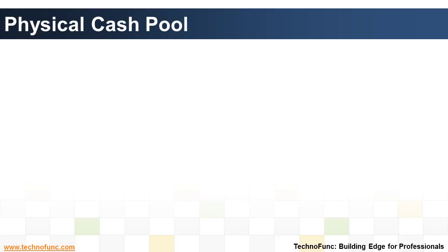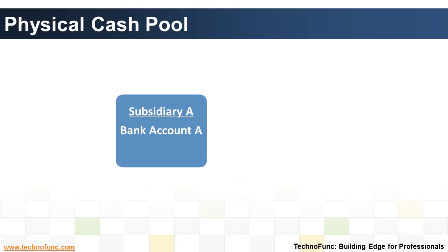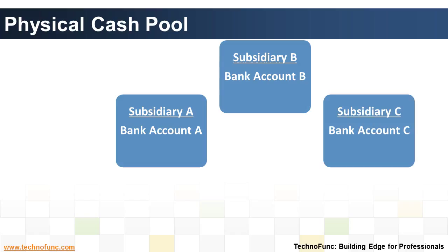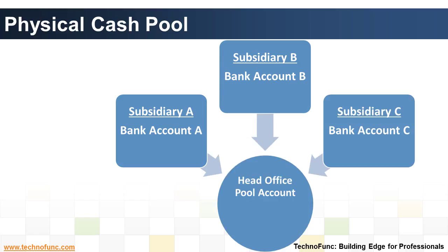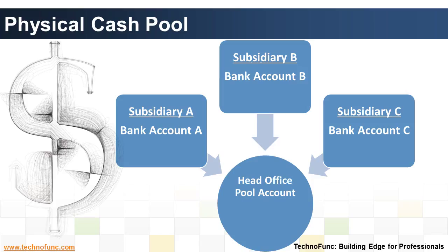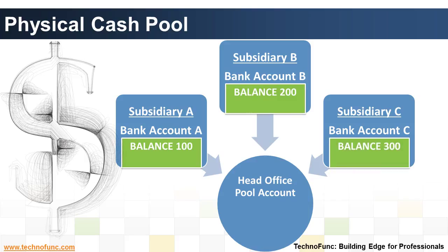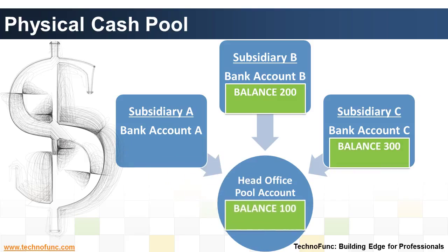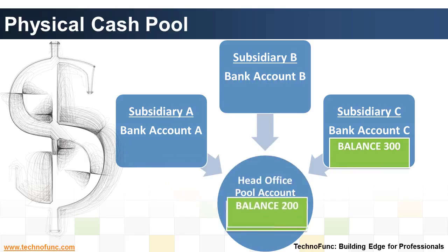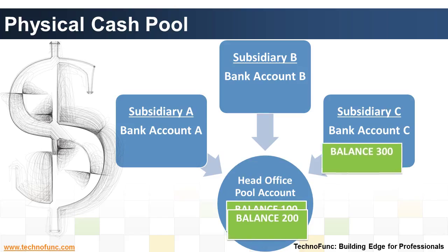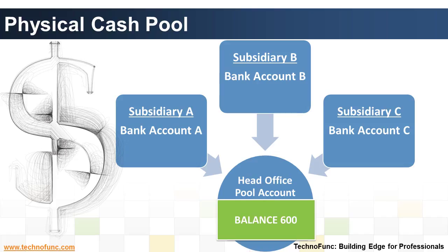A physical cash pool is a concentration account used for the purposes of managing liquidity. Surplus funds are physically concentrated into the account in order to maximize interest. Deficit accounts are covered by transfers from the cash pool in order to minimize overdraft interest. The master account is usually held by the parent company or by a treasury company established specifically for this purpose.